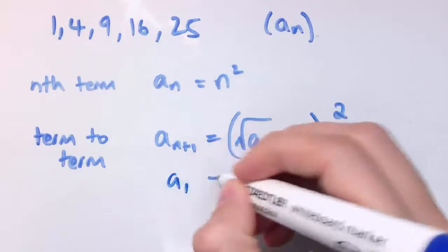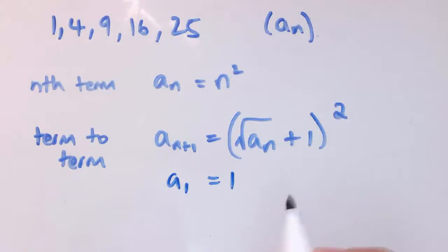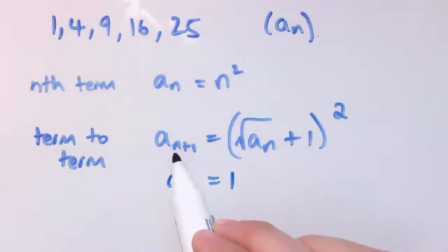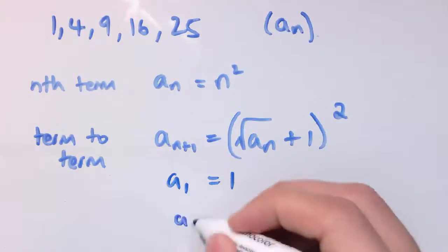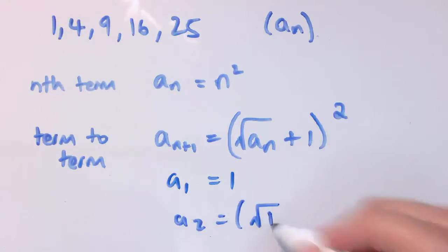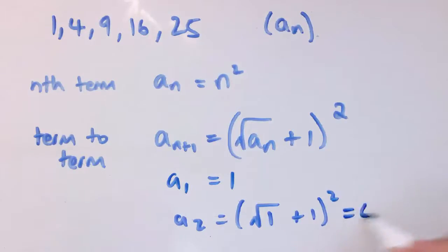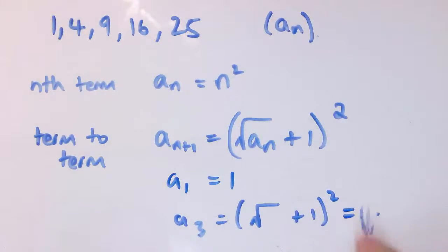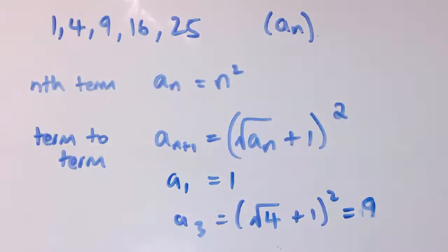We also need a1 equals 1. To get a2, put n equals 1: a2 equals the square root of a1, which is 1, plus 1, squared. That's 2 squared, which is 4, as we want. For a3 it's the square root of a2, which is the square root of 4, that's 2; add 1 to get 3; square to get 9. This definition works, but it's not particularly nice — all it's doing is taking the square root to get the term number, adding 1, and squaring. The nth term definition is much nicer here.